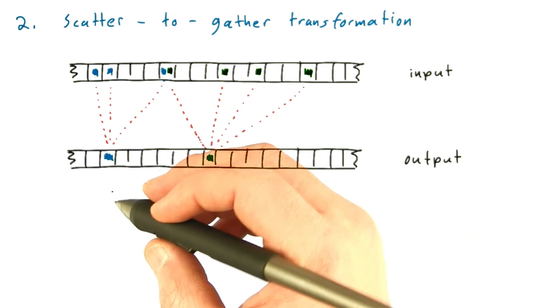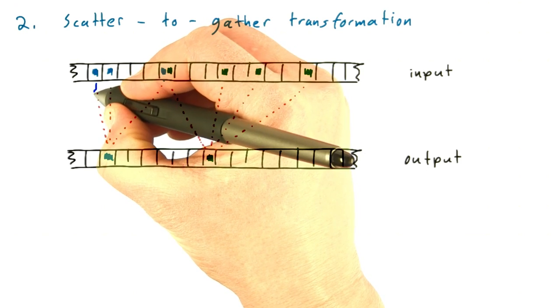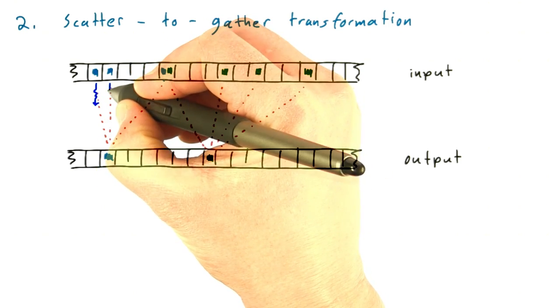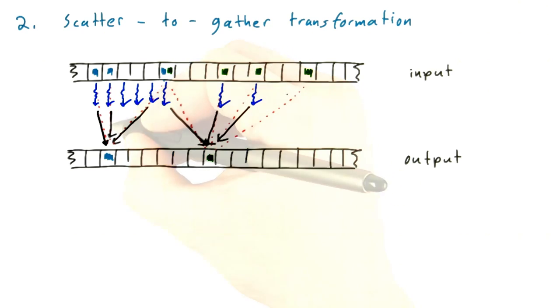Now we've talked about the difference between scatter and gather. In scatter, the threads are assigned to the input elements, and each one is deciding where it needs to write.